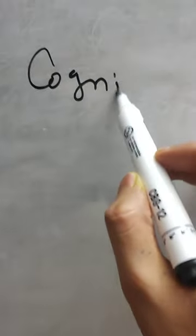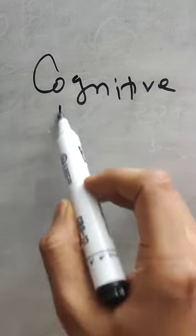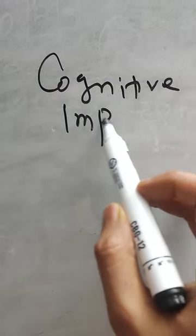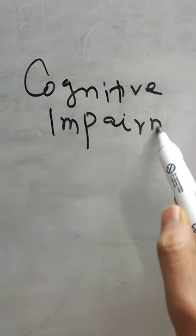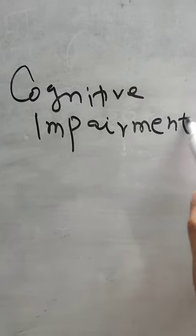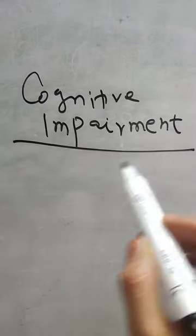Let's talk about cognitive impairment. Before discussing this topic, let's understand the five basic domains of cognition.